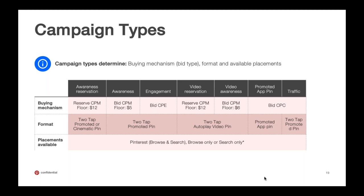I've specifically talked through our biddable CPC auction. We have quite a few different ways to buy on Pinterest, but about 95% of our partners live in our CPC auction, which is a second-price biddable auction where you'll pay one penny above the bidder below you targeting similar things. We also have a biddable CPM and a biddable video auction, which are the secondary and tertiary most relevant auctions for our partners.